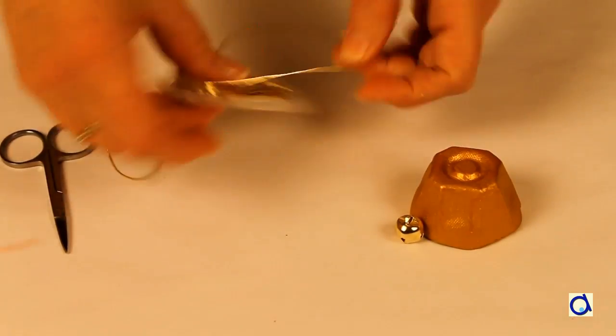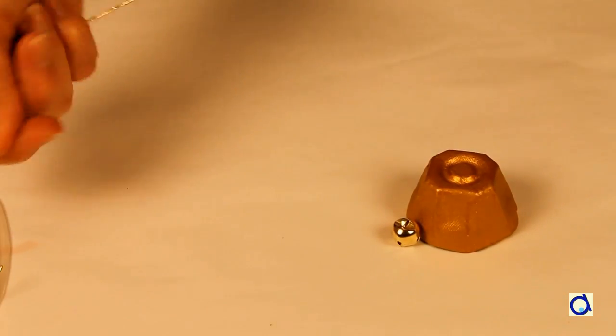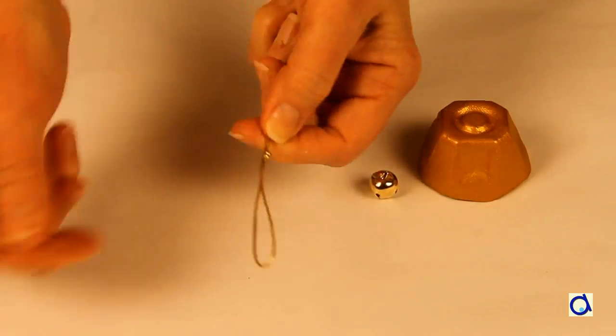While the gold paint is drying, cut a gold coloured thread of about 25 cm or 10 inches. Fold it in half and make a double knot 5 cm from the fold.